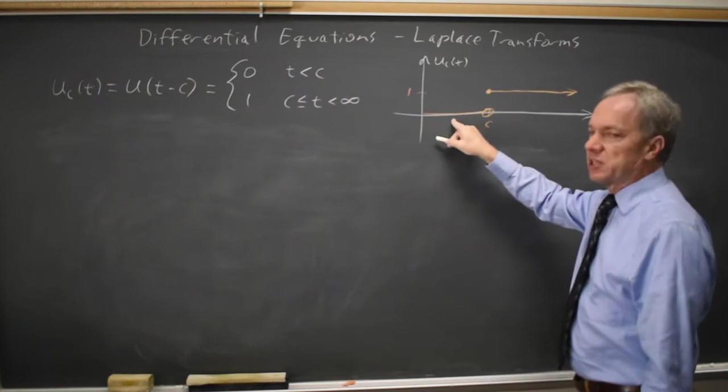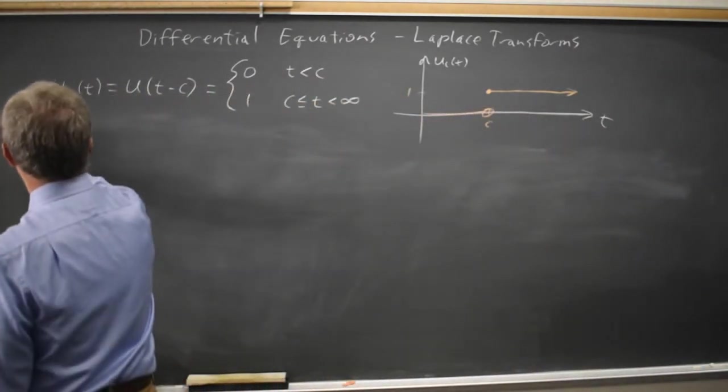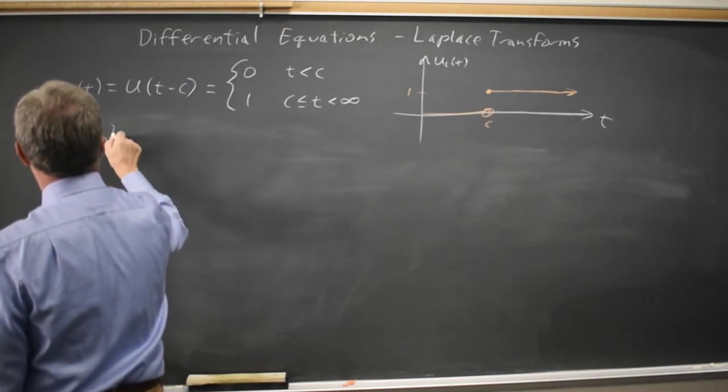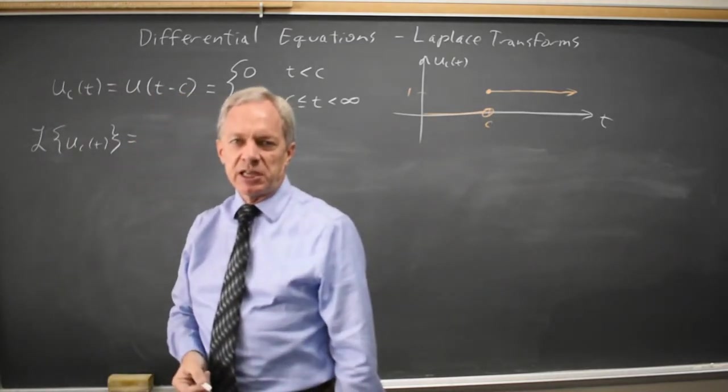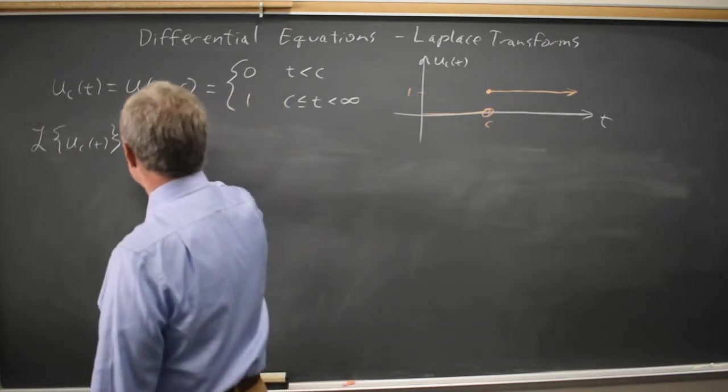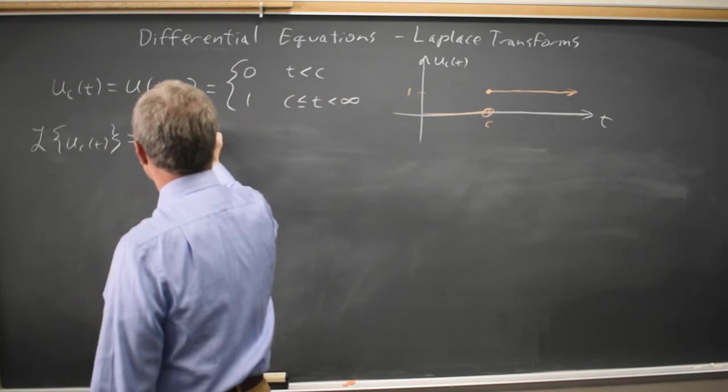So the graph of u_c(t) looks like this. The Laplace transform is written this way, and integral transforms are the integral from alpha to beta, k(s,t), f(t) dt. For the Laplace transform, alpha and beta are zero to infinity, k(s,t) is e to the negative st.